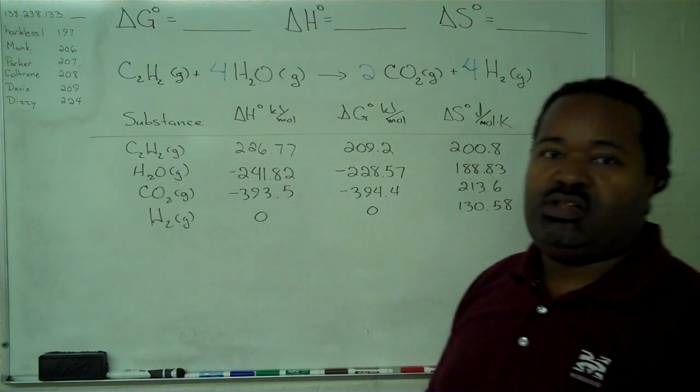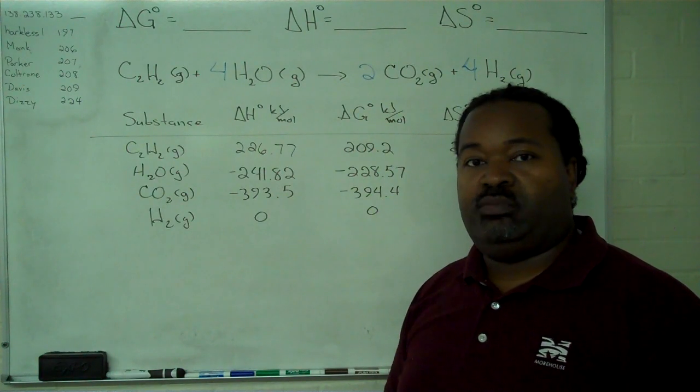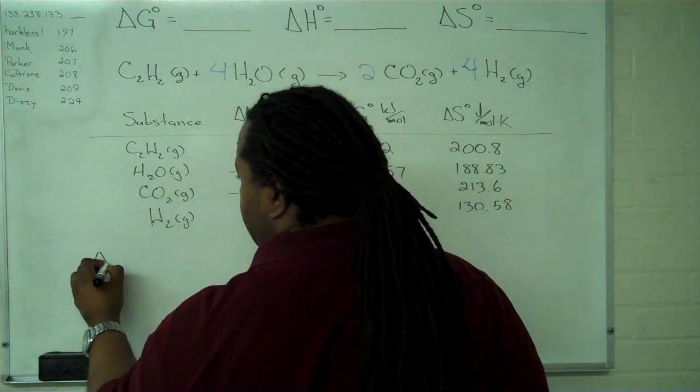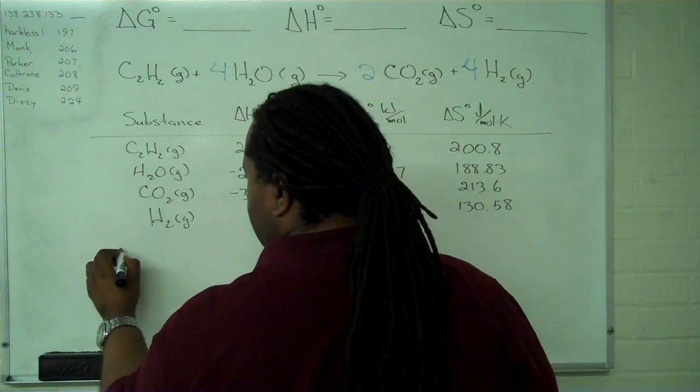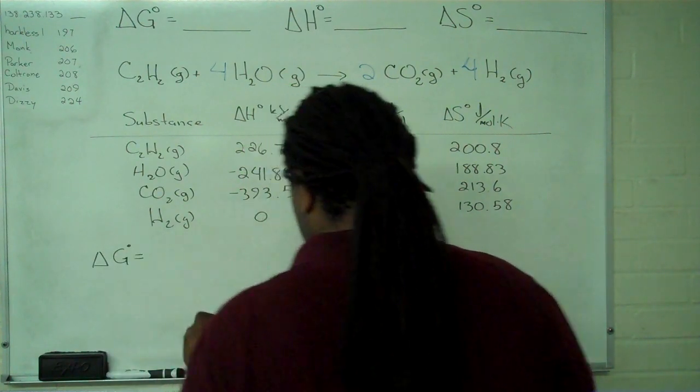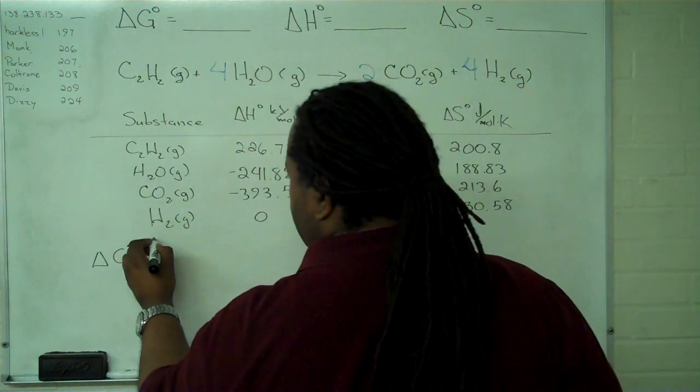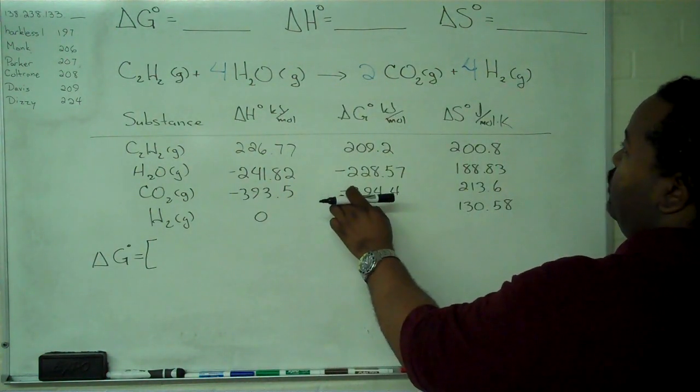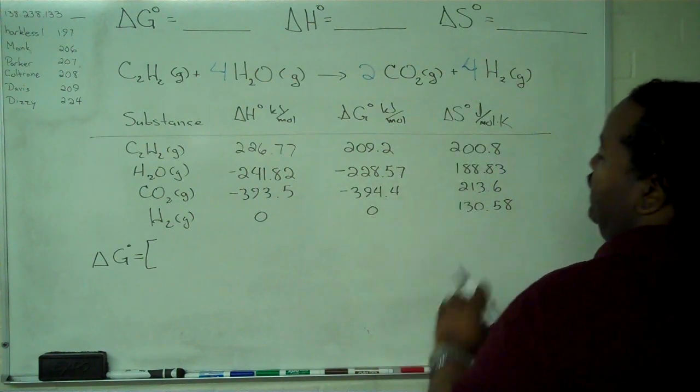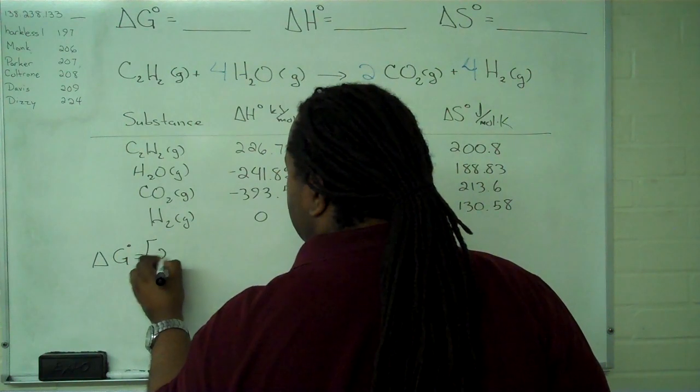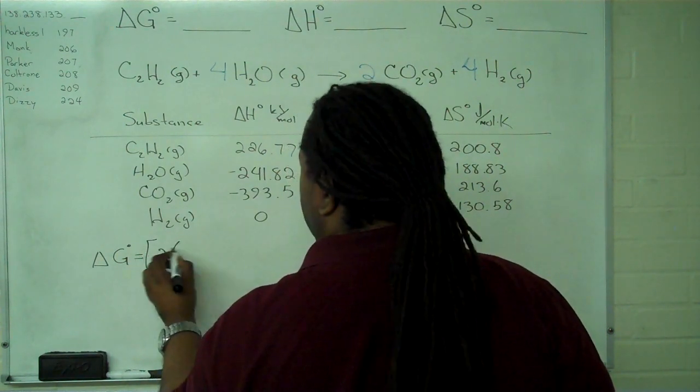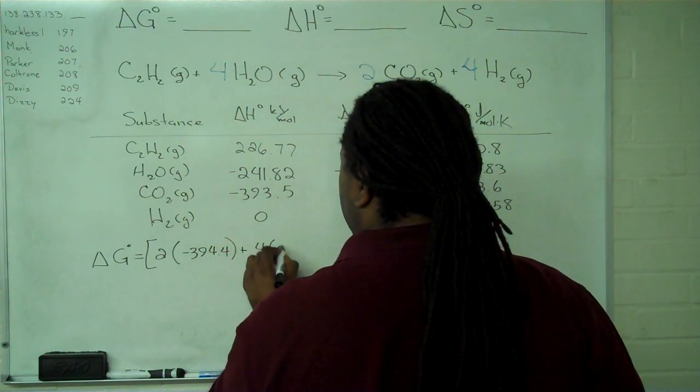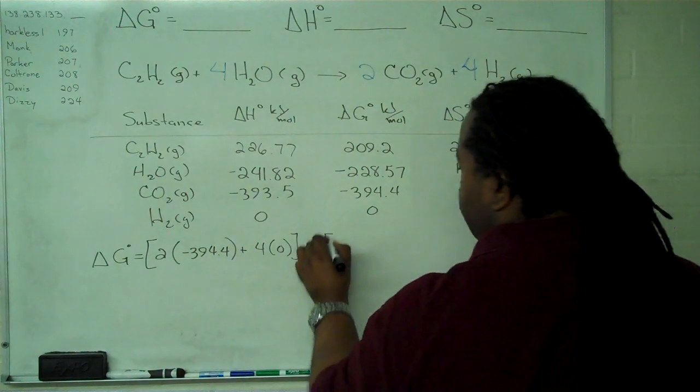So now that we have all of our values in our data table written out, we can apply the stoichiometric sum of products minus the stoichiometric sum of reactants. And up first is delta G. So to get the stoichiometric sum of products, we will need two times the values we have for CO2, and four times the value we have for hydrogen. So this is two times minus 394.4, plus four times zero.